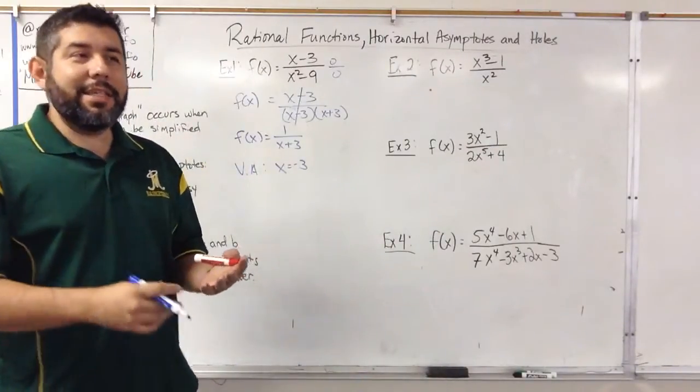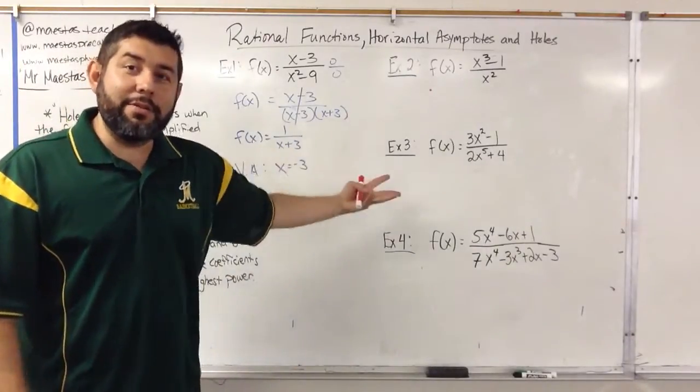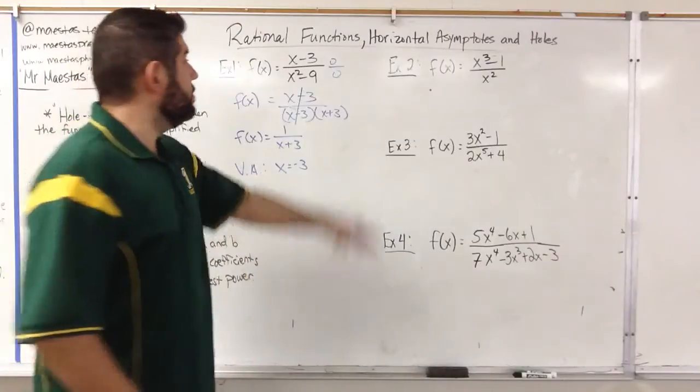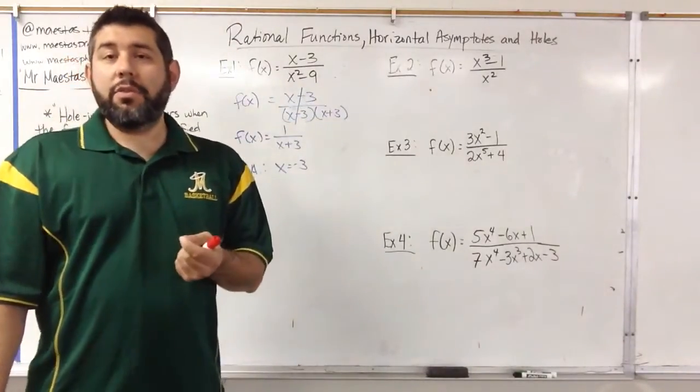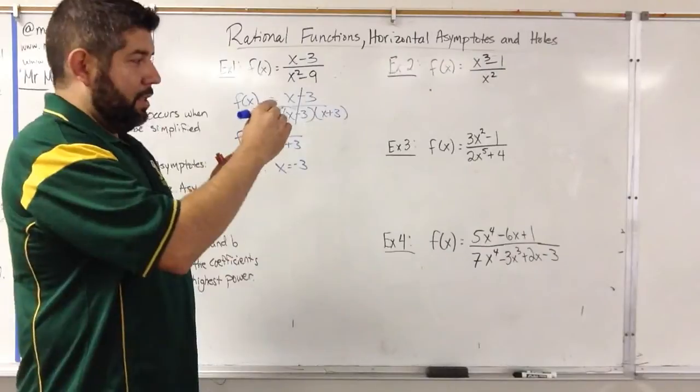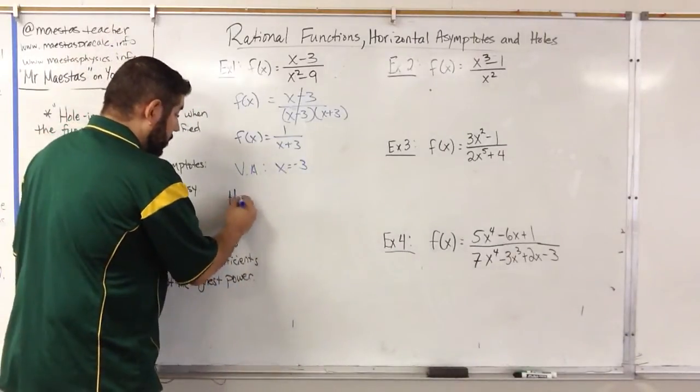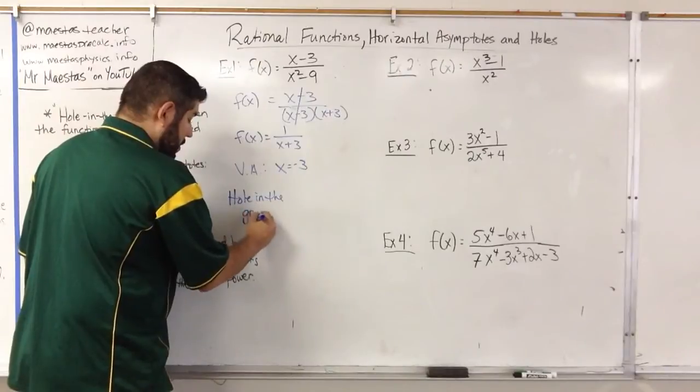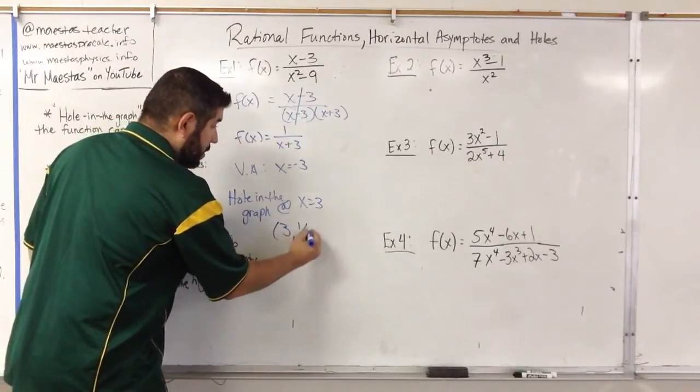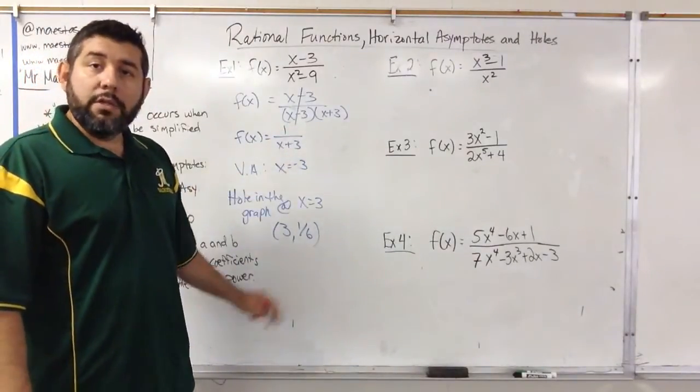0 divided by 0 is actually called indeterminate. We can't determine what that is. It's even worse than taking a number divided by 0, because Chuck Norris can do that. Nobody can do this. It's indeterminate, 0 over 0, so it can't be determined. 3 cannot be in our domain. So what do we do? In order to denote that 3 is also not in our domain, we make a hole in the graph. We just make an open circle when we're graphing this, a hole in the graph at that point where x equals 3. So we're going to write there's a hole in the graph at x equals 3, more specifically 3 comma 1/6. Now how did I get 1/6? I plugged 3 in my simplified function and I got 1 over 6. So there's a hole in the graph there.